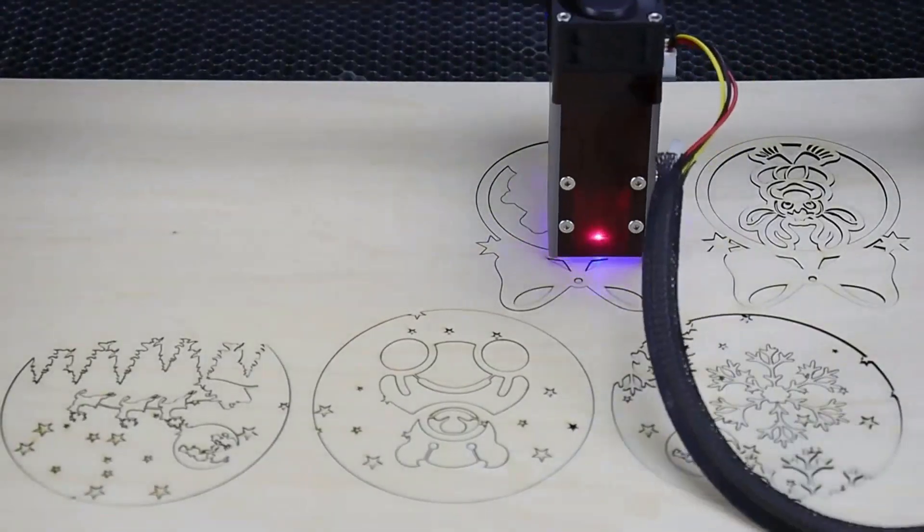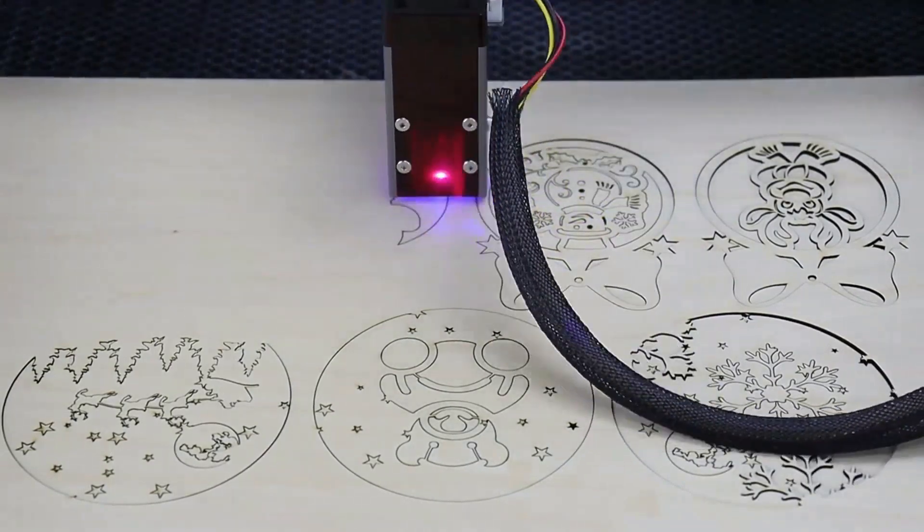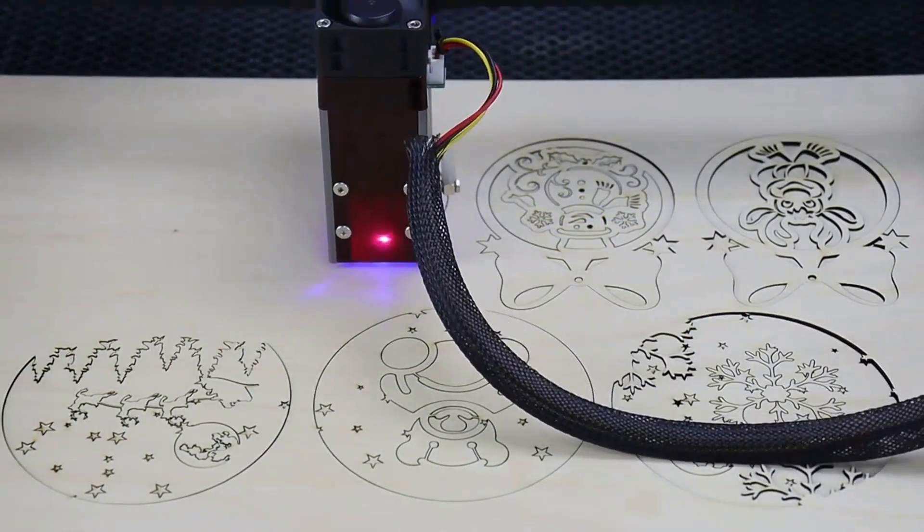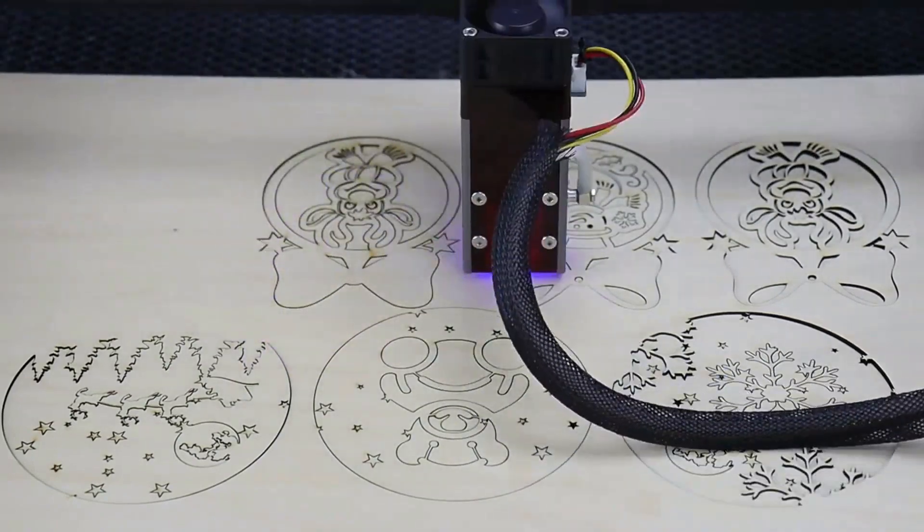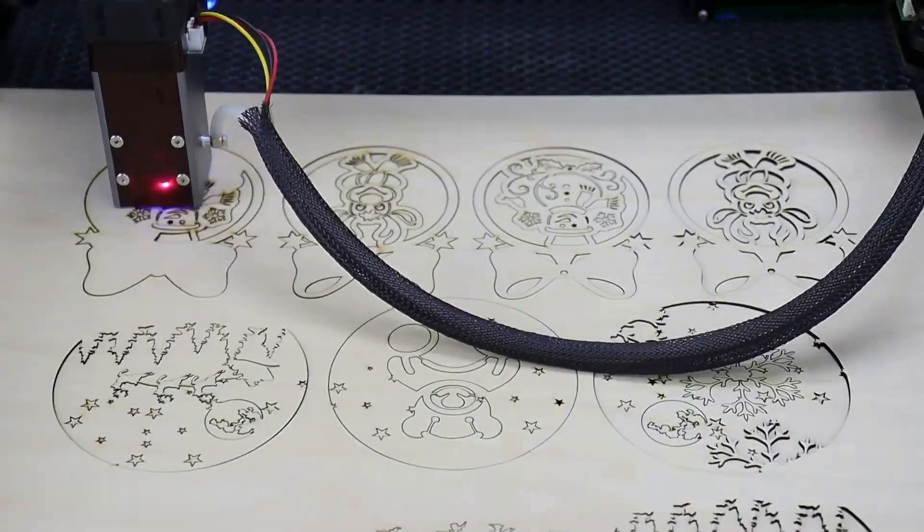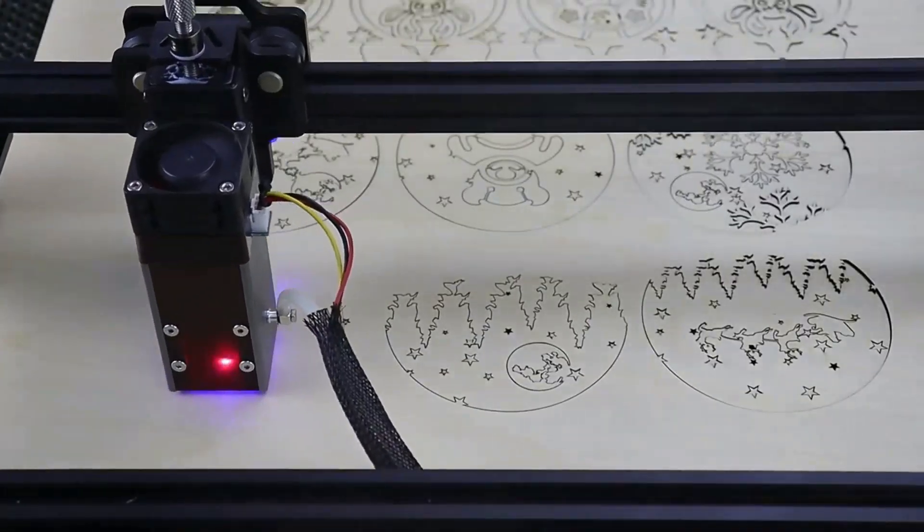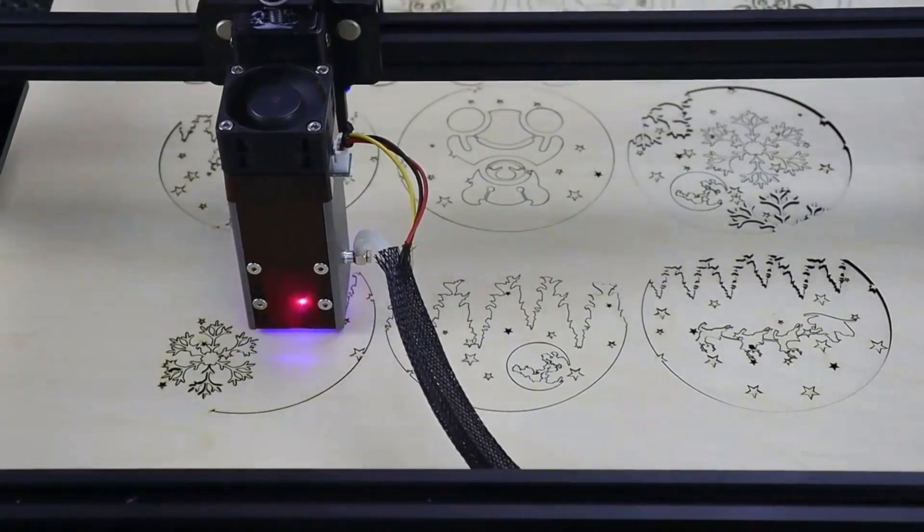The newest design laser module with built-in air assisted interface improves cutting and engraving capabilities, especially reducing yellow edges when cutting wood. Supports offline working with SD card—as our engineers' patent, drag file to the SD card, the machine starts to work, then you can close the computer.